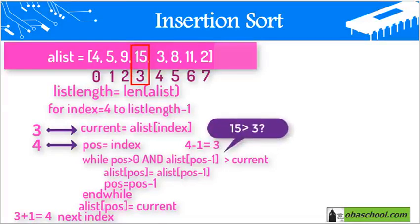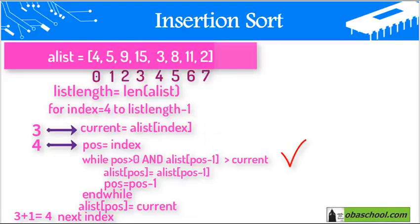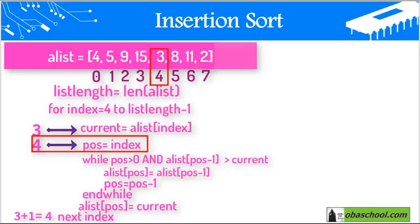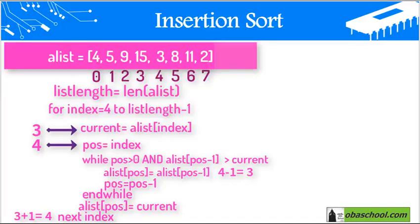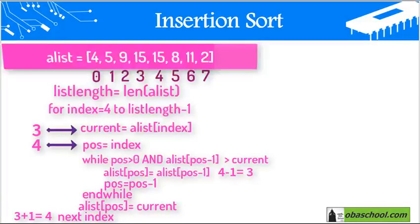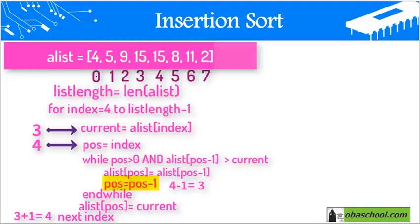Is 15 greater than the current value, which is 3? Yes, so we enter the while loop. While pause is 4, we put list[pause-1] — that is list[3] — into list[pause], which is index 4. The value at index 3 is 15, so we place 15 at index 4. Then we update pause to pause minus 1: 4 minus 1 equals 3.